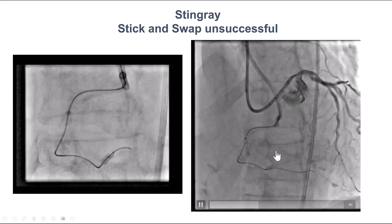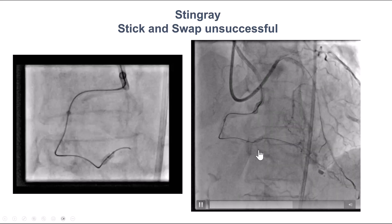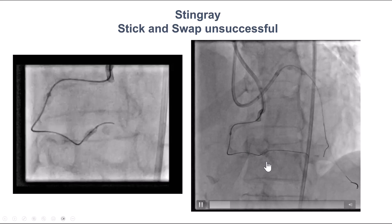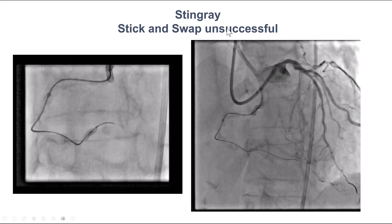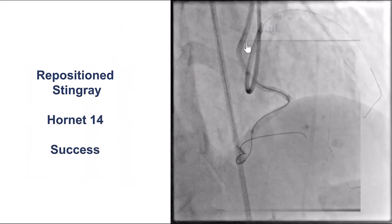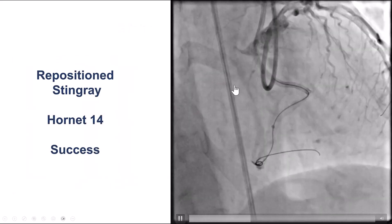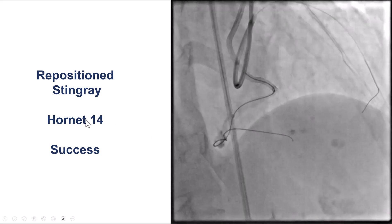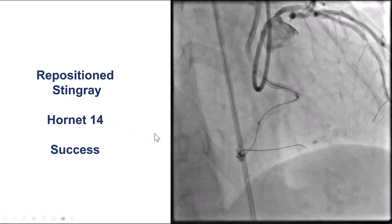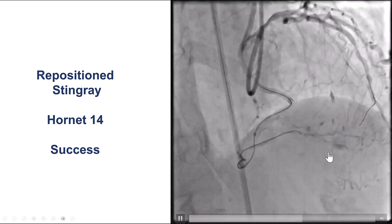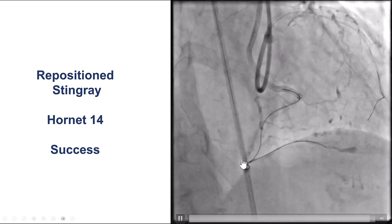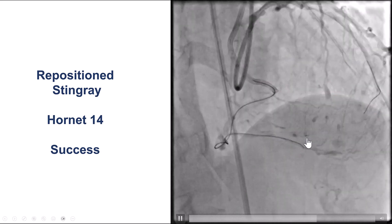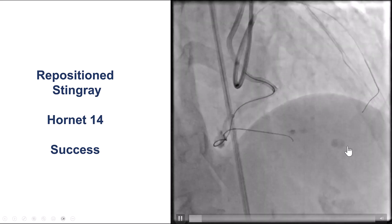We then went to the distal right coronary artery, which seemed to be less calcified, and tried to reenter. We did the stingray balloon with stick and swap, but it did not work. We repositioned the stingray balloon and used a stiffer wire, the Hornet 14. Using the caudal projection with better visualization, we successfully were able to cross into the posterior descending artery.